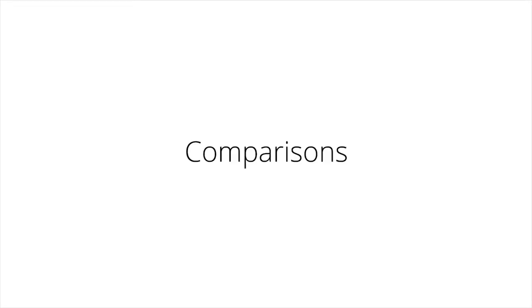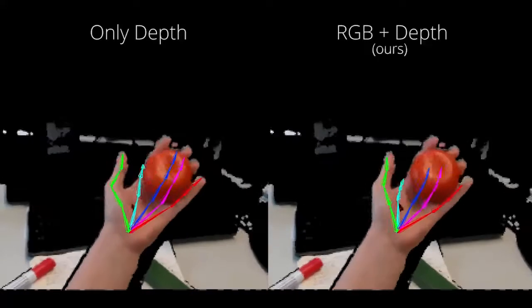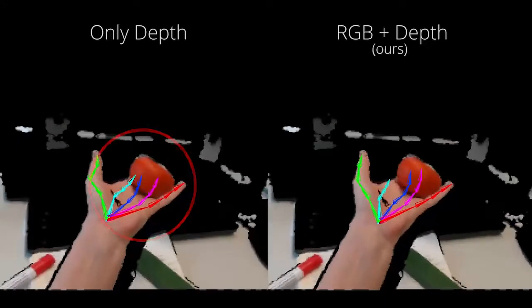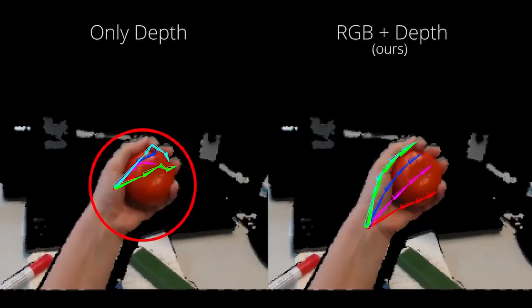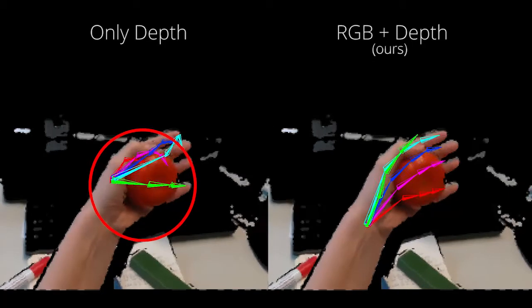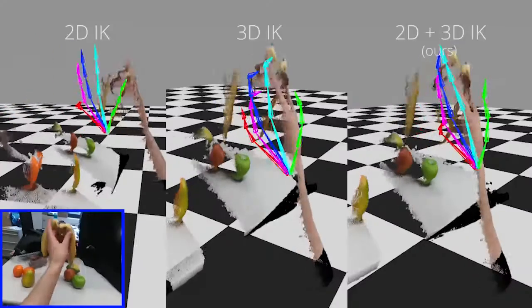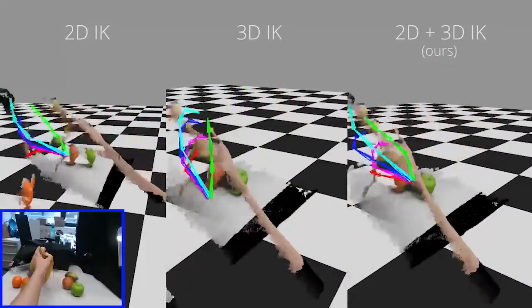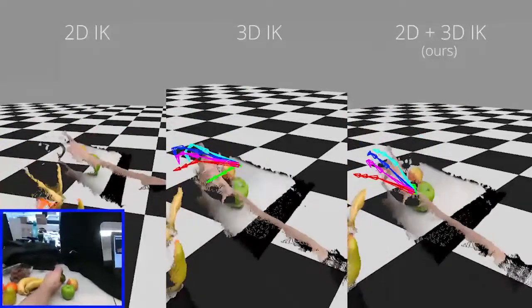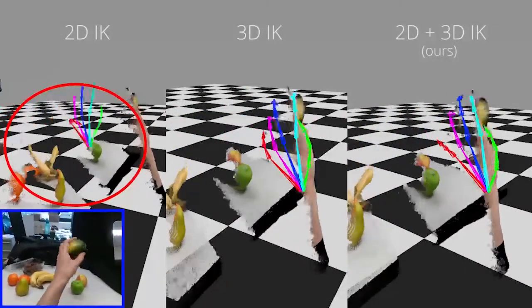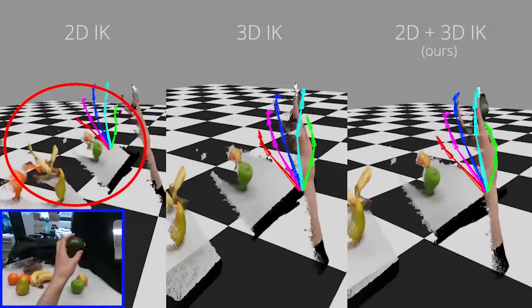We now compare different variants of our method and also with previous work. Using both RGB and depth data together improves pose estimation. Our combined 2D and 3D pose tracking formulation outperforms using 2D or 3D only. The 2D pose tracking energy alone produces large, incorrect depth variations.